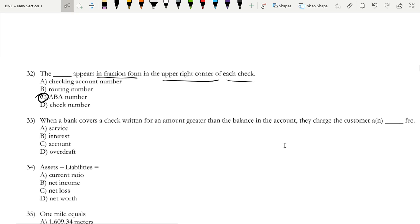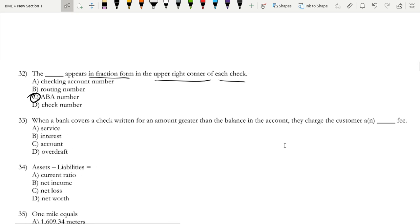When a bank covers a check written for an amount greater than the balance in an account, they charge the customer an overdraft fee. This means that you are exceeding the account's limit. You're paying more than what you have in the account. This is considered an overdraft—you're going over the top, kind of think of it like that.